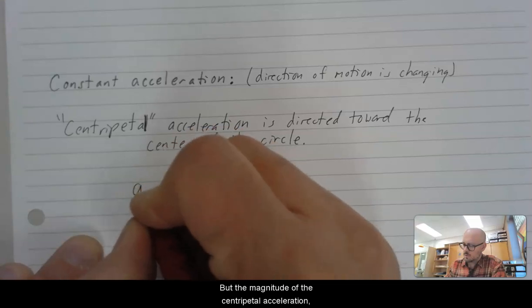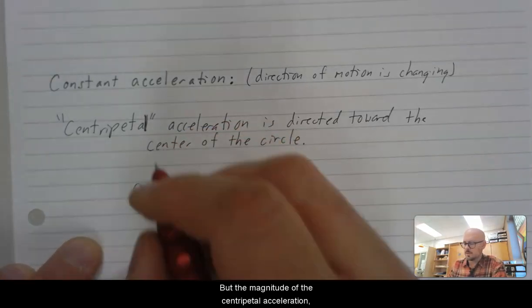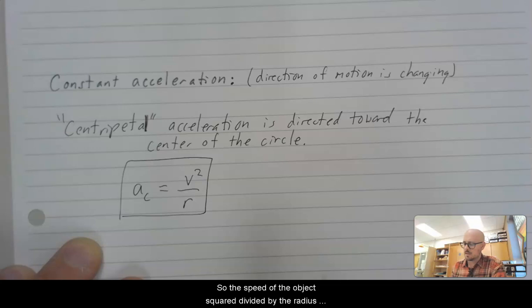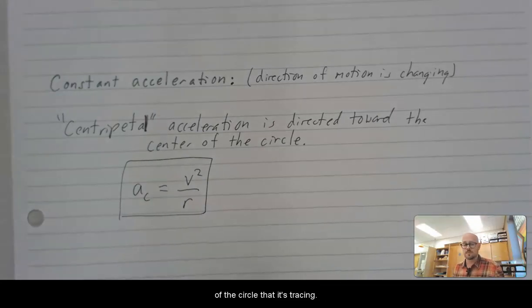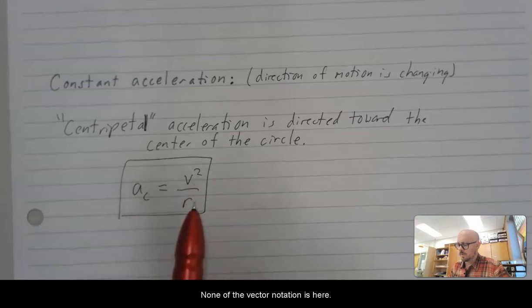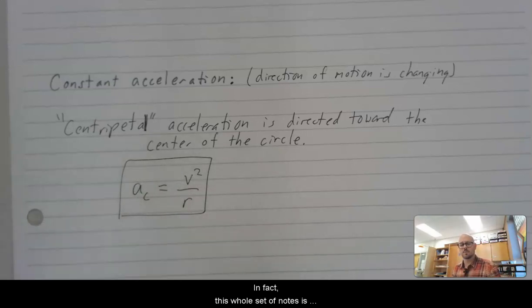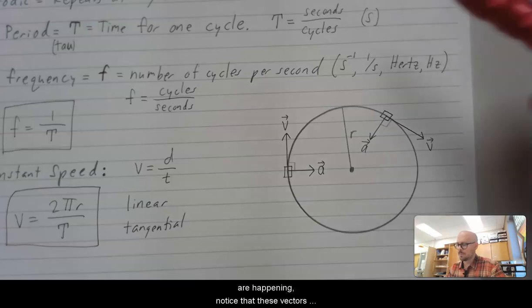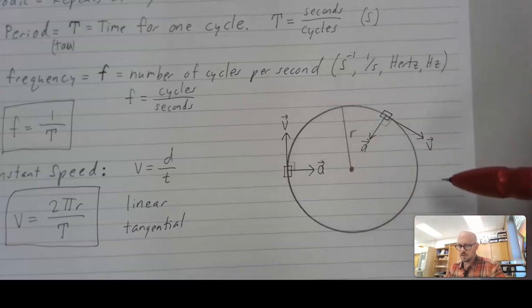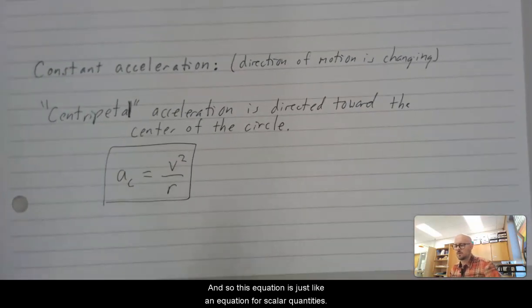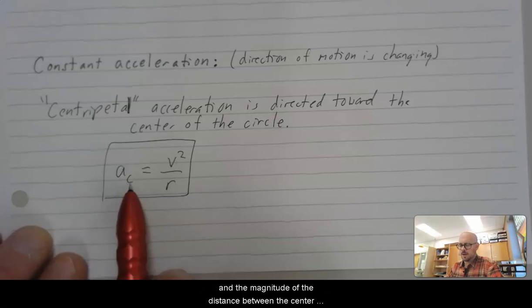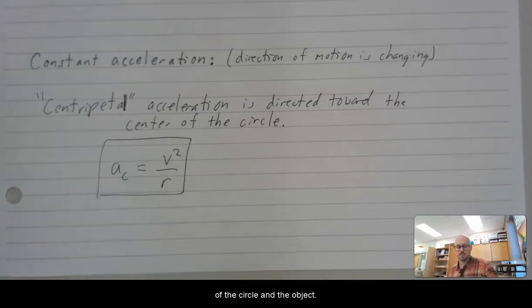I'm happy to show you the proof of why this equation is correct. But the magnitude of the centripetal acceleration, so a sub c, is equal to v squared divided by r. So the speed of the object squared divided by the radius of the circle that it's tracing. None of the vector notation is here. In fact, this whole set of notes is devoid of vector notation, even though acceleration and velocity are vectors that are happening. Notice that these vectors change direction. And so this equation is just like an equation for scalar quantities. The magnitude of the velocity, the magnitude of the acceleration, and the magnitude of the distance between the center of the circle and the object.